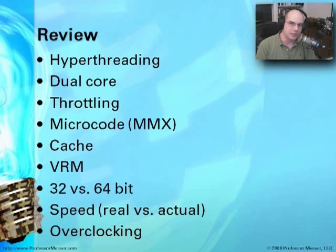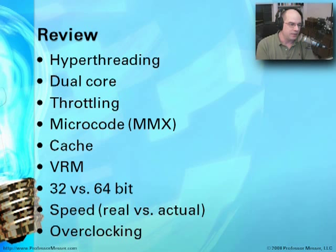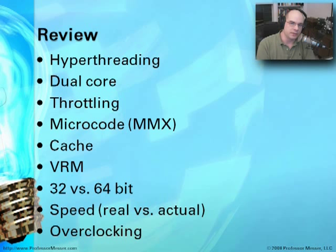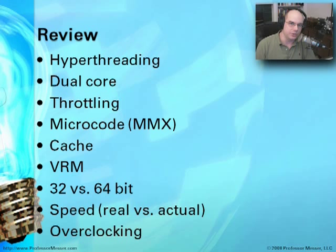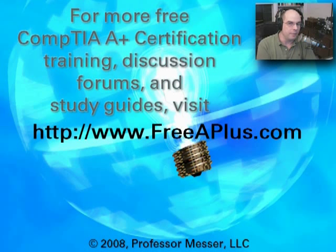In review, we've talked about many different CPU technologies today: how hyper-threading and dual-core technologies can increase overall speed and performance, how throttling can decrease CPU speed, and how microcode, caching, and voltage regulator modules affect CPU operation. The 32-bit versus 64-bit distinction will be increasingly important over time. All of these things working together show us the difference between rated and actual CPU performance, and we touched on how hobbyists use overclocking. Visit freeaplus.com for more A-Plus certification training and message boards.